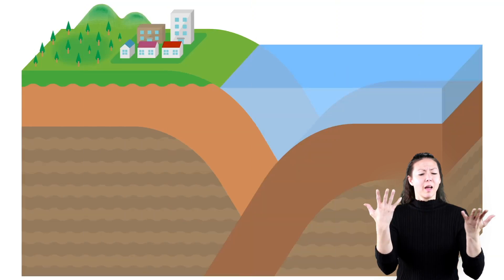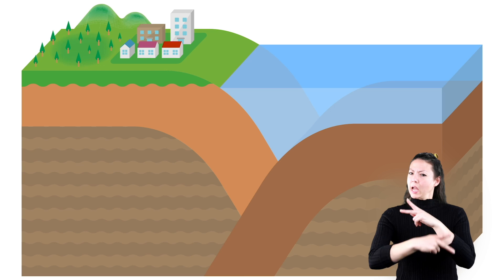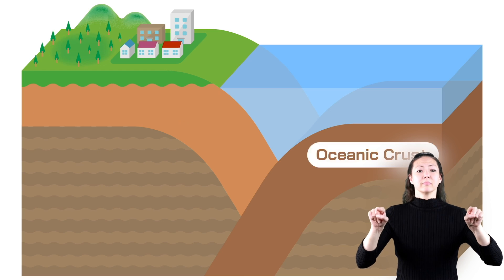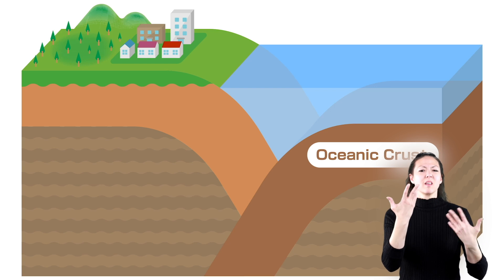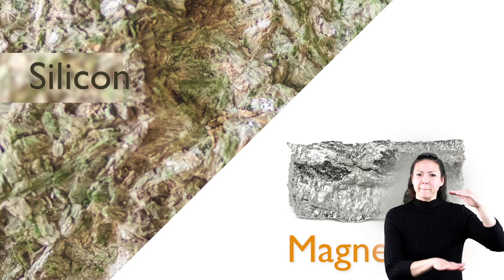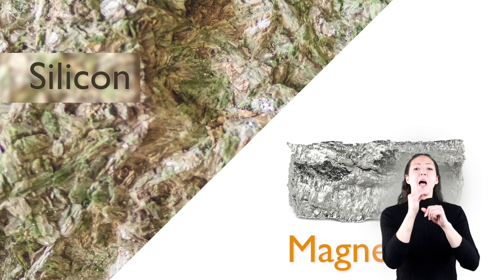And there's not just one kind of plate either. Plates are divided into two kinds: oceanic and continental. Oceanic plates are made from crust called SIMA that exist below the oceans. SIMA gets its name because it's made from silicon and magnesium.